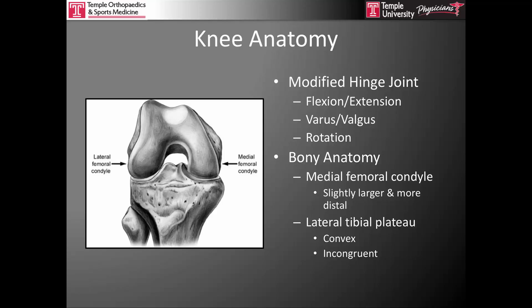The bony anatomy of the knee is such that the medial femoral condyle is slightly larger and more distal, which creates a little rotation in the course of knee flexion and extension. Also of note is that the lateral tibial plateau is convex and therefore incongruent, and the knee relies on the lateral meniscus to provide some congruence within the lateral compartment.